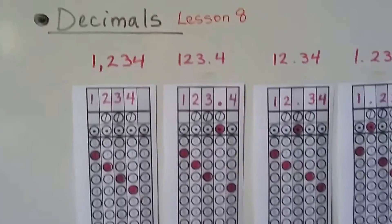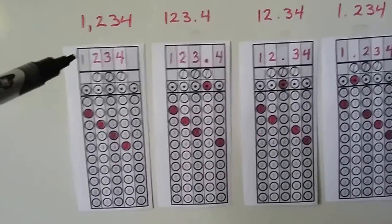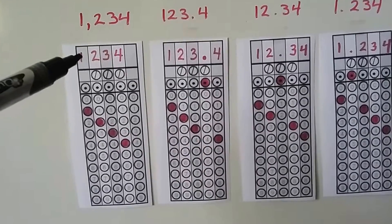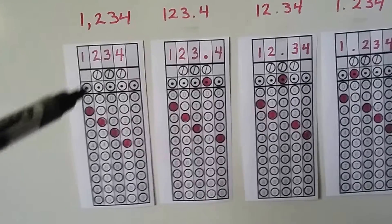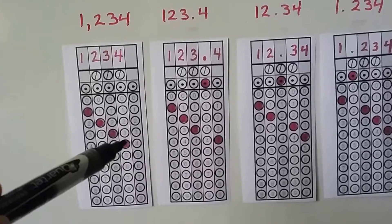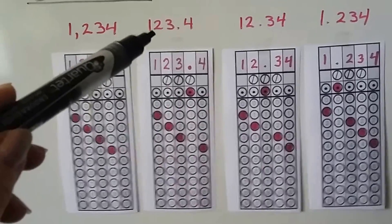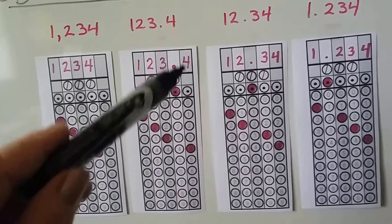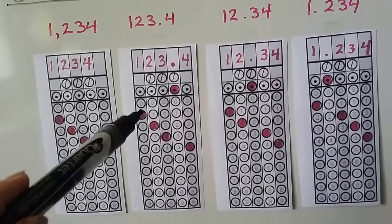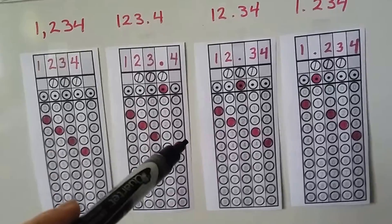Lesson 8, we're going to get into decimals. Here's a whole number, 1,234. There's no comma. You just fill in the 1,234 and fill in those dots. If we have 123.4, now we use that decimal point. And then we put the 4. We fill in the 1, 2, 3, decimal point, 4.